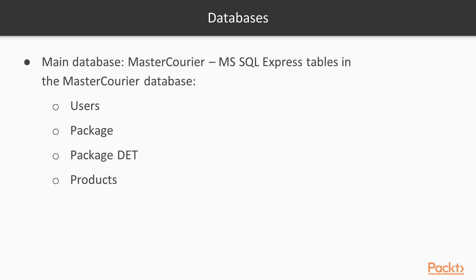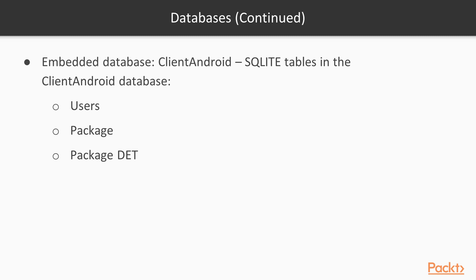The first database we will use is called MasterCurier. This is our main database and it will be a Microsoft SQL Express 2014 edition database. The second one is a temporary database on Android devices and it will be called Client Android, and it will be an Embedded SQL Lite database.